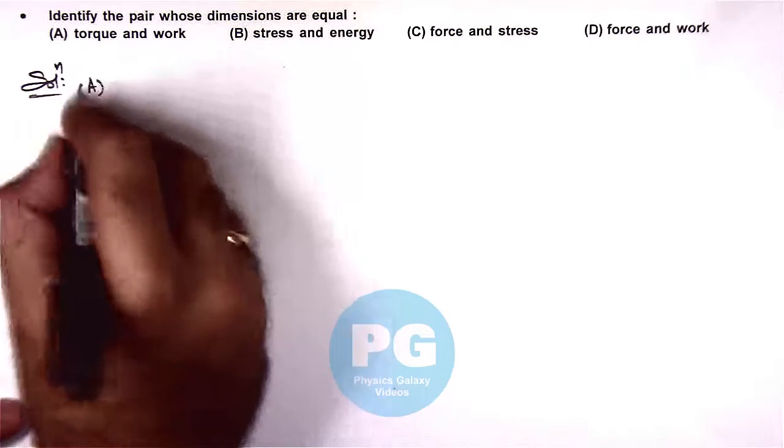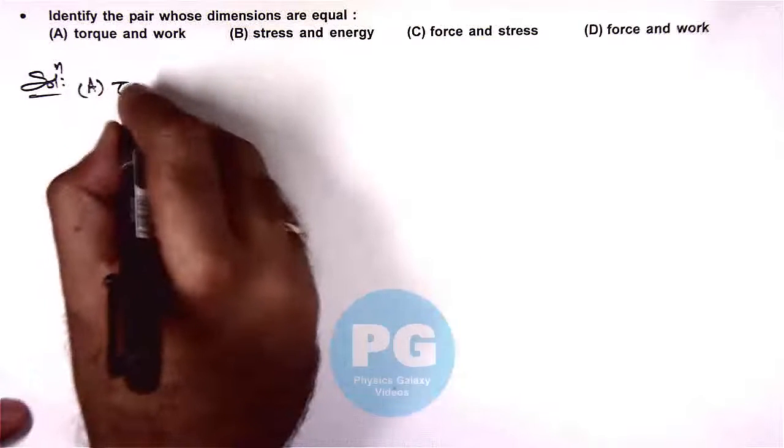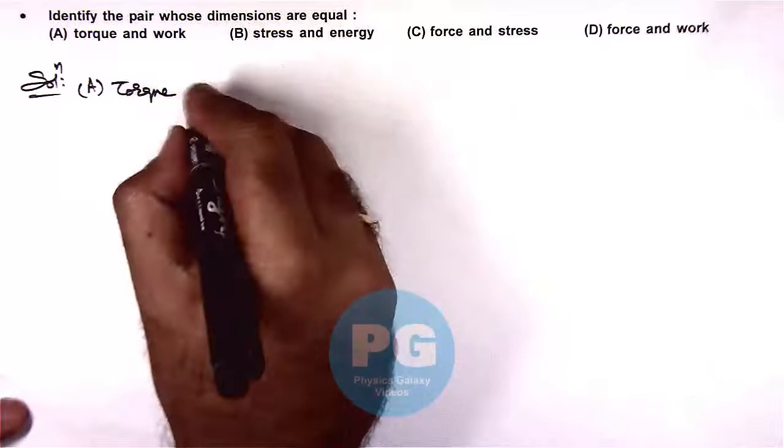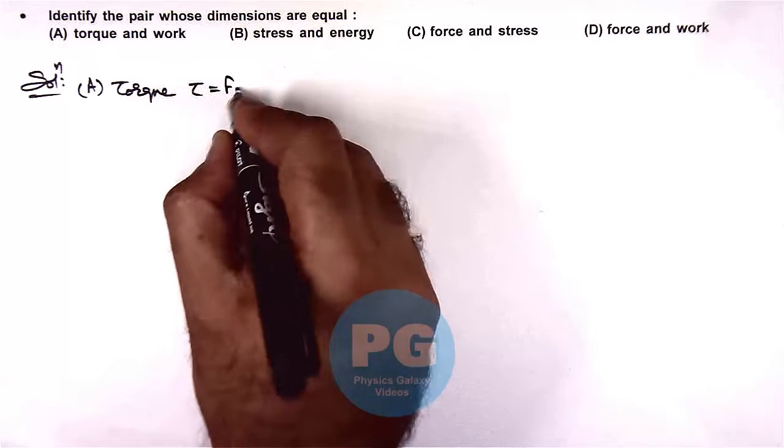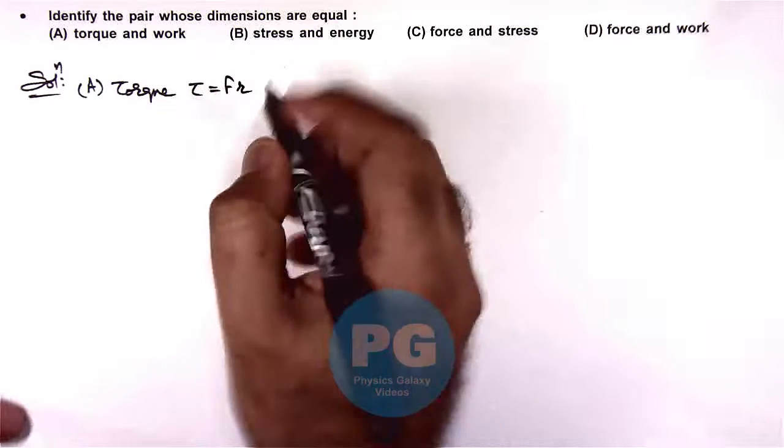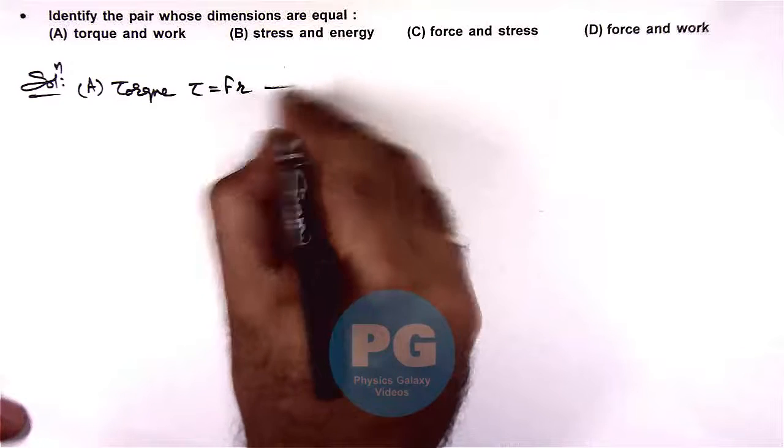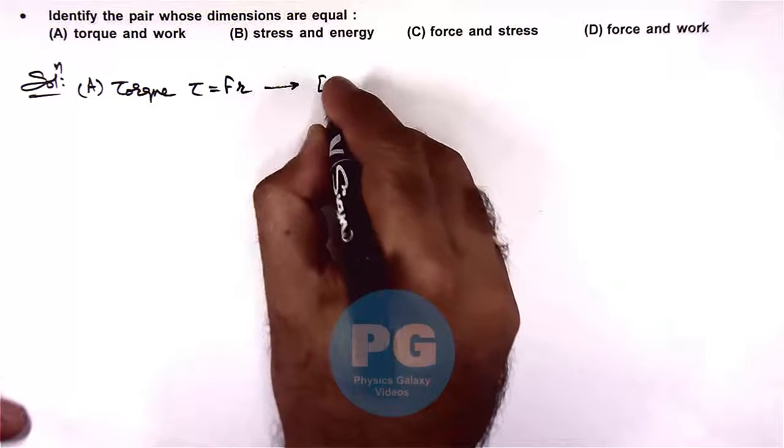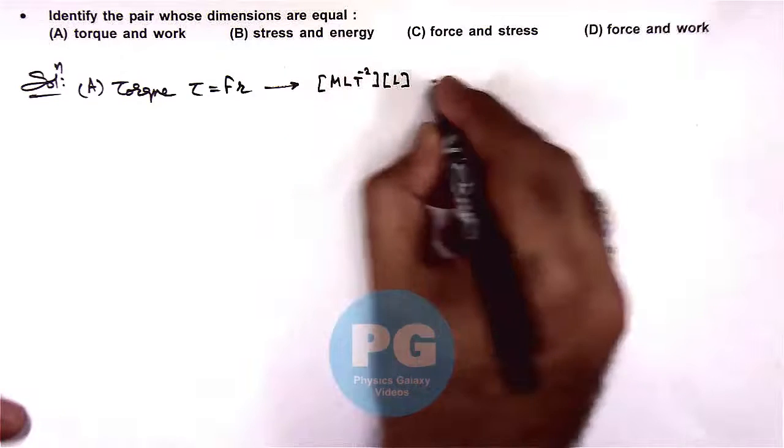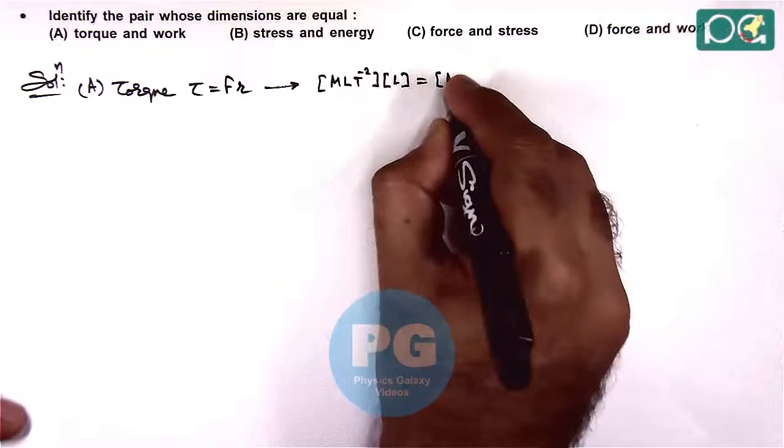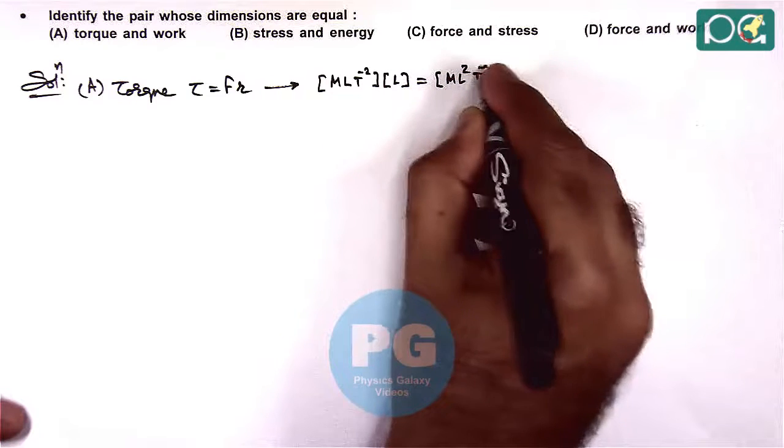We talk about option A, where if we calculate the dimensions of torque, and we know torque is given as the product of force with the perpendicular distance from axis of rotation. So if we calculate the dimensions it is M L T minus 2 multiplied with the dimension of distance, which gives M L 2 T minus 2.